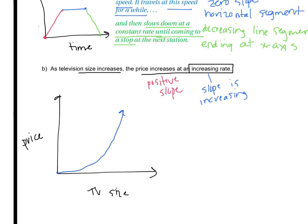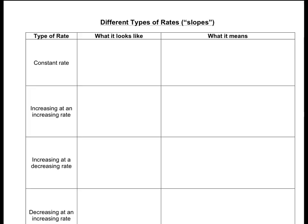Let's fill out a chart that has all these different rates explained. Remember, rate is another way of saying slope, so all of these things are talking about the slope. A constant rate is linear, so it looks like a straight line. It could be going up, going across, or going down — but it's a linear relationship. These are the three different types of constant rates.